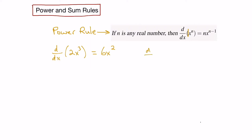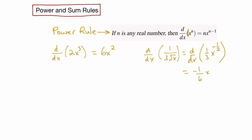Let's look at another example. Let's say we wanted to find the derivative with respect to x of 1 over 3 square root x. First, let's rewrite this as finding the derivative with respect to x of one-third x to the negative one-half, using our exponent laws. Now let's apply the power rule: we multiply the coefficient one-third by the exponent negative one-half and then subtract 1 from the exponent. That gives us negative one-sixth x to the negative three-halves.